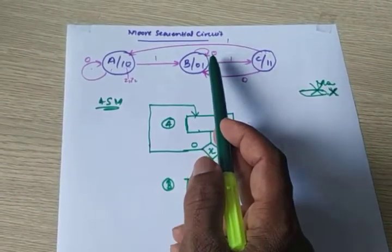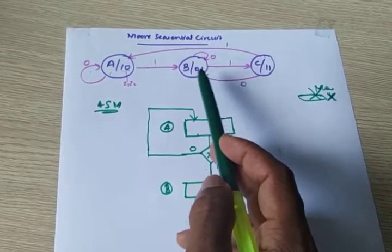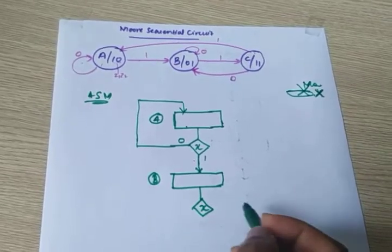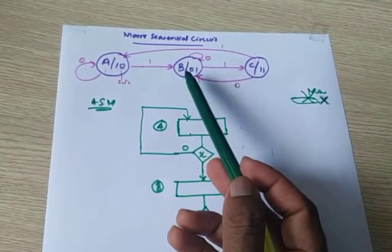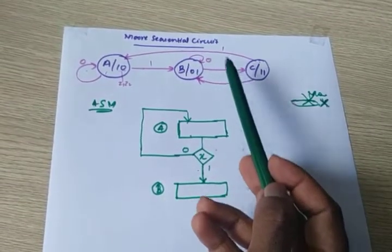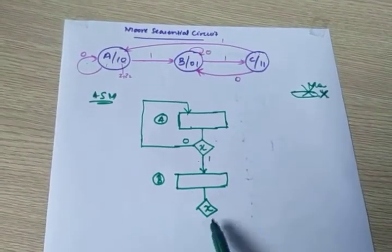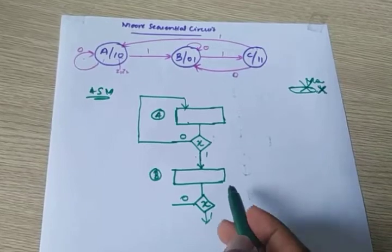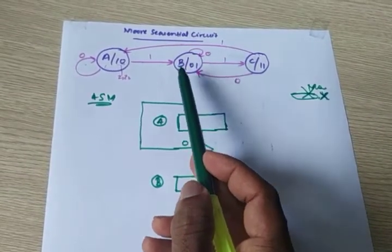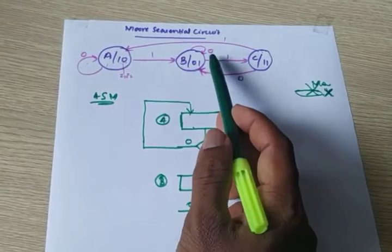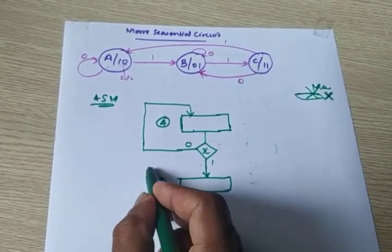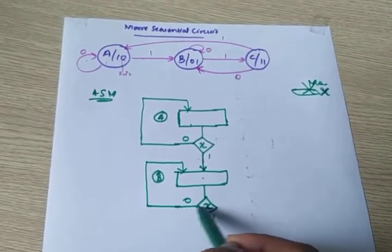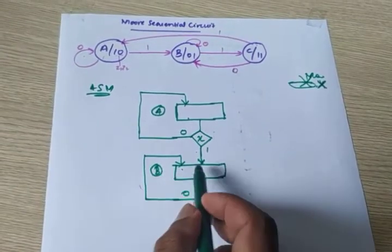Now I am in state B. State B zero comes and one — what happens if zero and one come for state B? I need to draw the decision box because I need to take two decisions at state B: what happens if zero comes, what happens if one comes. If state B zero comes, it stays at state B only. So we connect it back to state B.